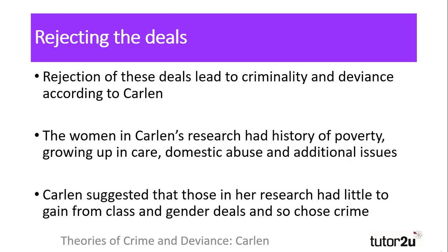Through interviewing the subjects in her research, Carlin suggested that criminality was a result of women either rejecting these deals or having the opportunities for these deals blocked. Those interviewed were unable to obtain the material rewards of the class deal due to poverty, often due to long-term unemployment or lack of qualifications to secure employment. Furthermore, psychological and emotional issues resulting from growing up in care or being victims of domestic violence left the gender deal unappealing, as the family was far from a source of emotional comfort. Carlin argued that the rejection of these deals led women to alternative methods — that is, crime.